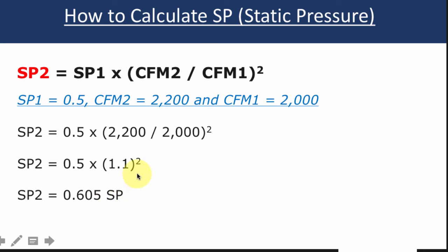And static pressure, same thing. To get the new static pressure, you use the existing static pressure times your new CFM over your old CFM squared. So once again, put all those values in, do the calculation, and you get 0.605.